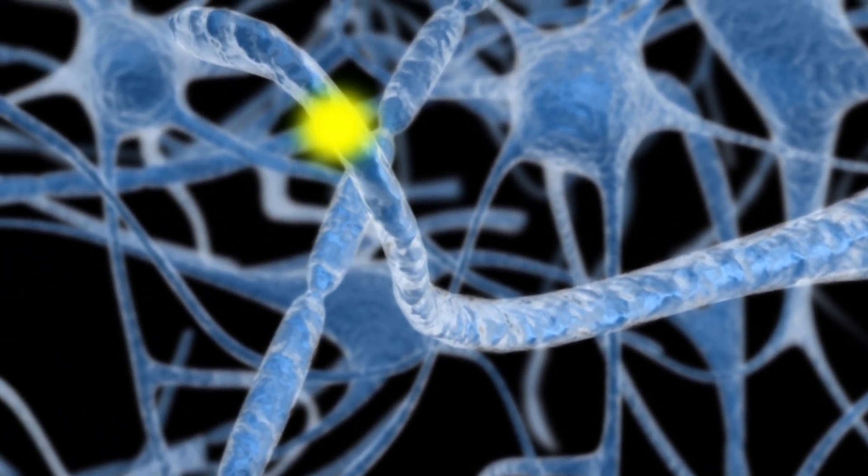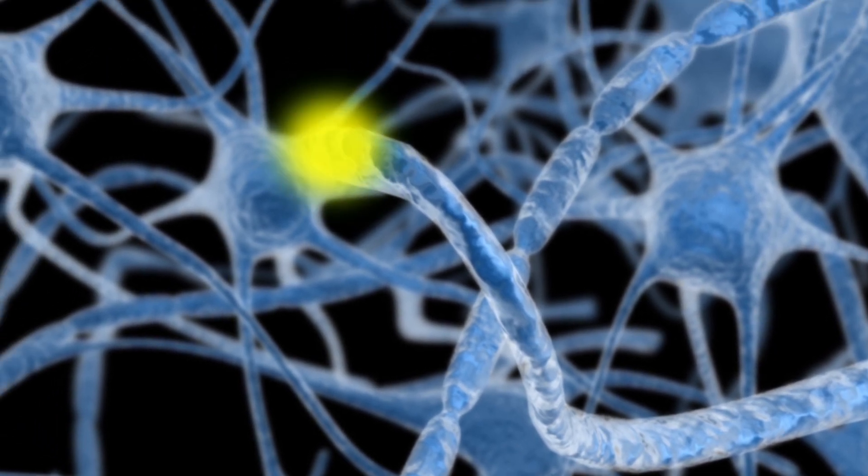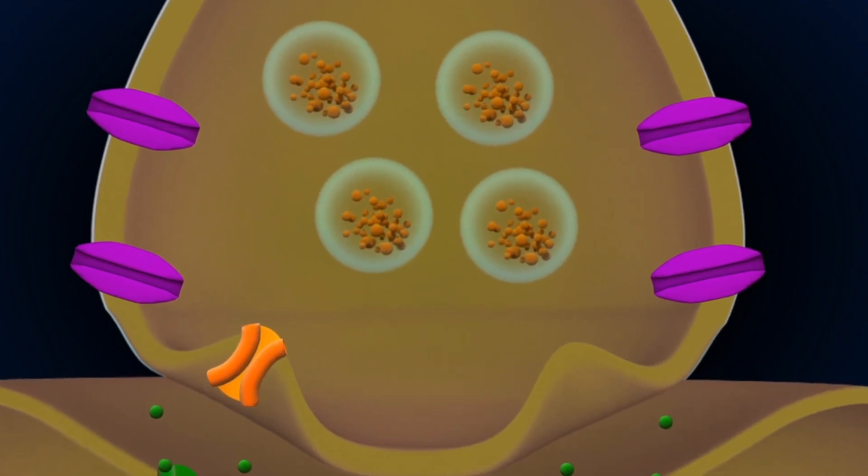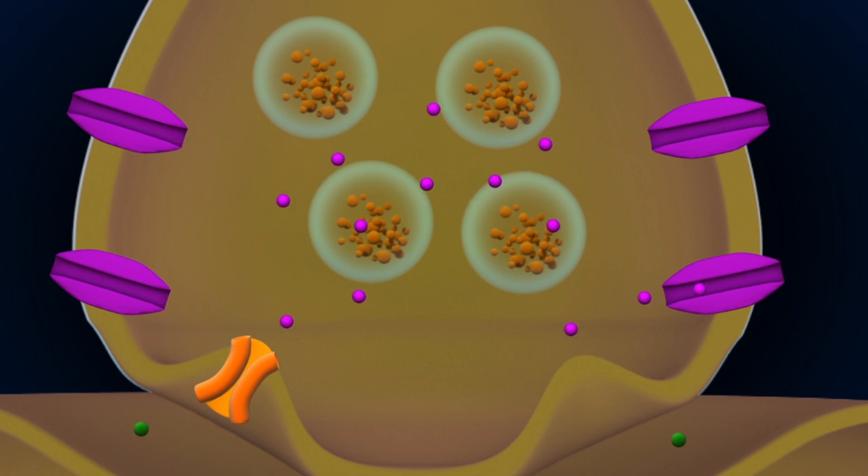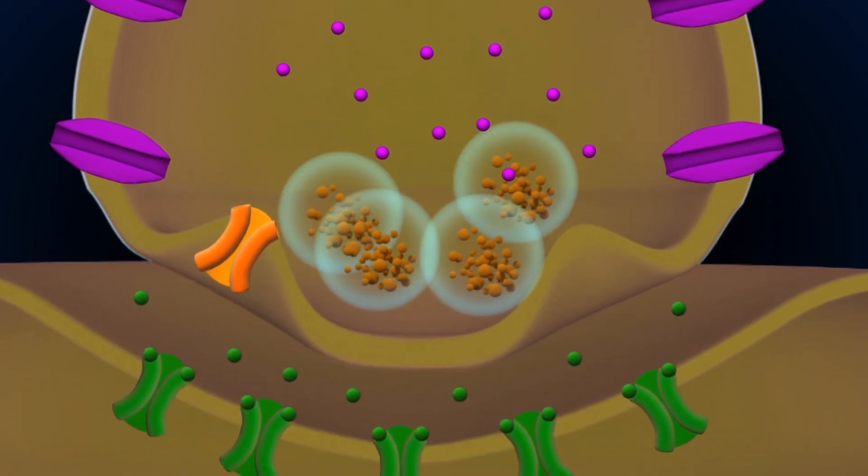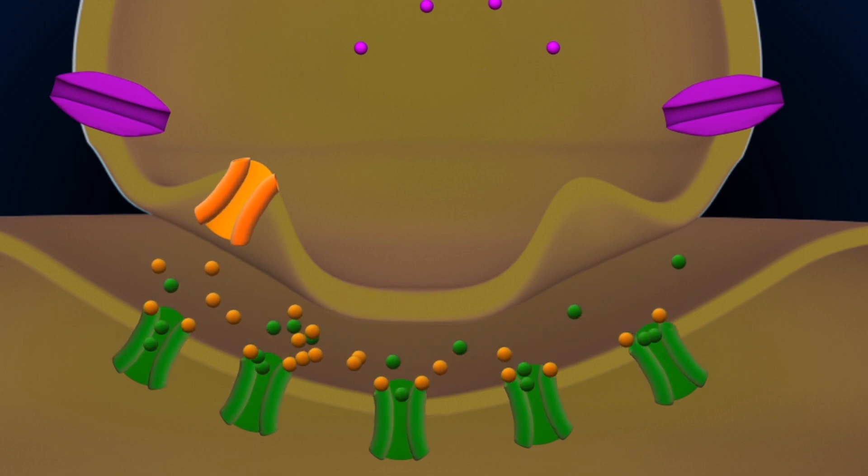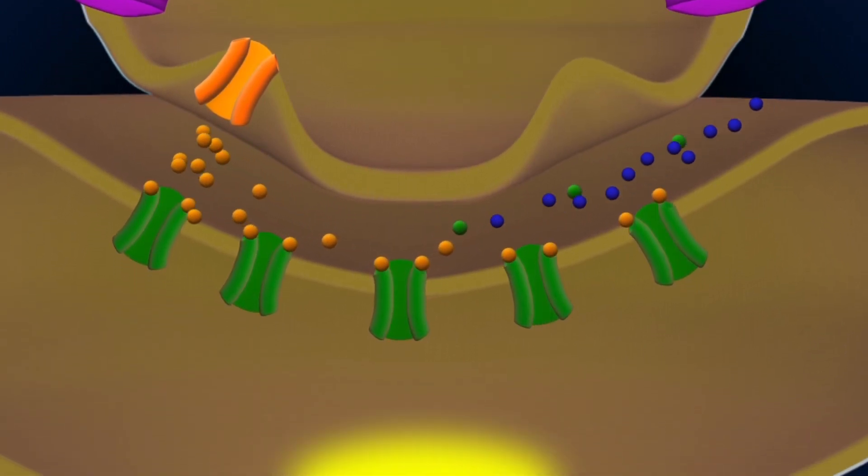As a result, dopamine stays in the synapse longer and continues binding to receptors. Increased binding opens more sodium channels for a longer time, increasing sodium diffusion into the postsynaptic neuron, which becomes positive enough to generate an action potential.